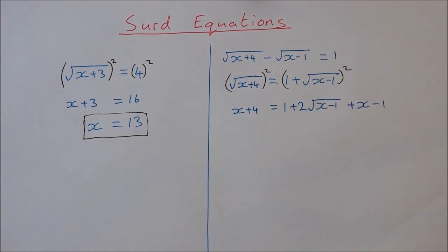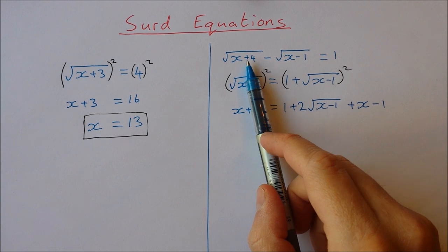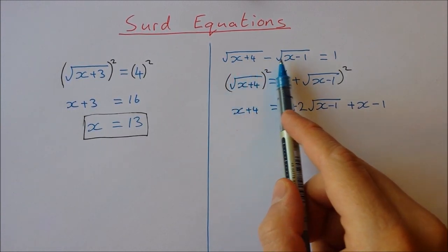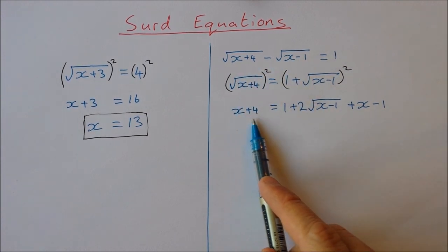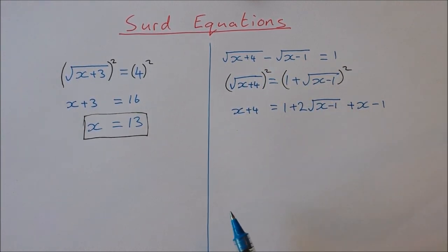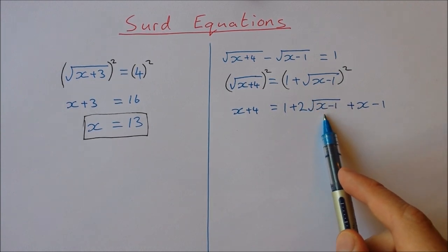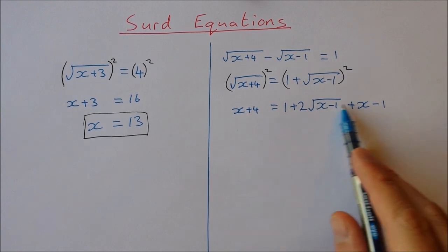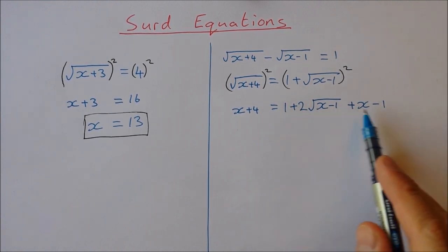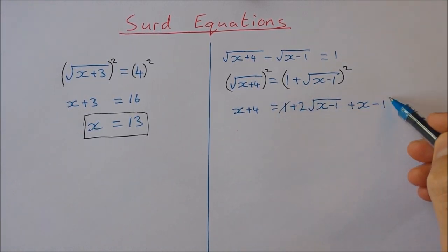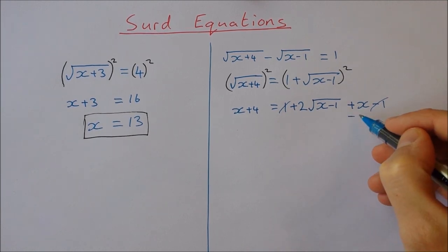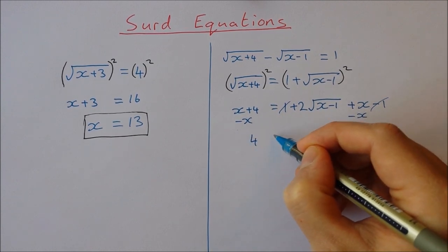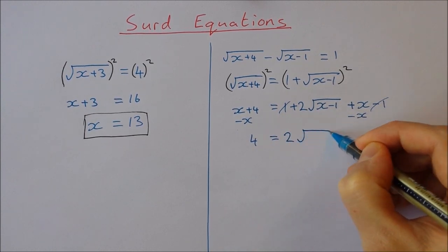By isolating one square root and squaring both sides, we've gone from an equation with two square roots to one with only one. Now we do the same thing again — isolate this square root and square both sides. On the right-hand side, 1 and minus 1 cancel to 0. Taking x from both sides leaves us with 4 equals 2 times the square root of x minus 1.